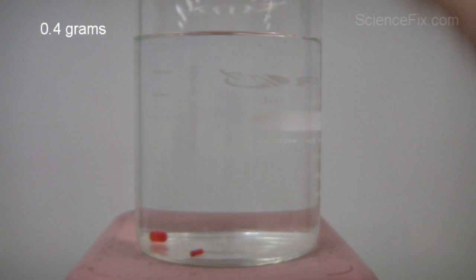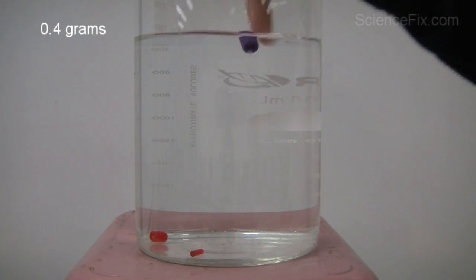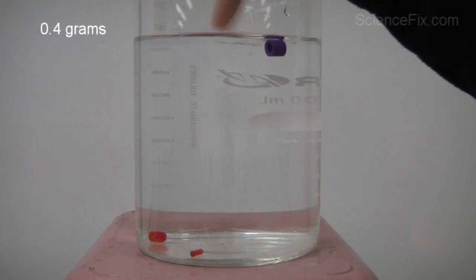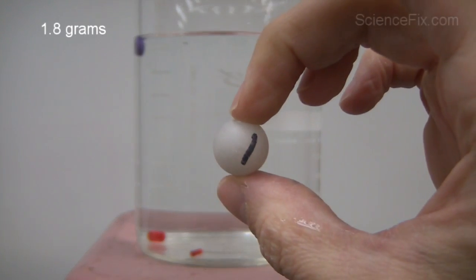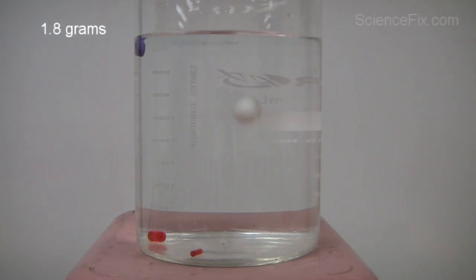Next we have the purple tube, and it has a mass of 0.4 grams, and it floats. Here's the white marble with a mass of 1.8 grams, and that marble floats.